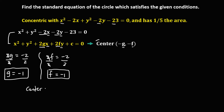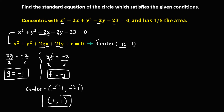From the center formula, the center is (negative g, negative f). Substituting: negative g is negative of negative 1, and negative f is negative of negative 1. Negative times negative gives positive, so the center is (1, 1).